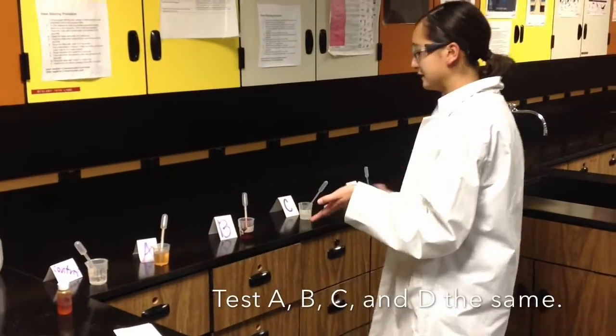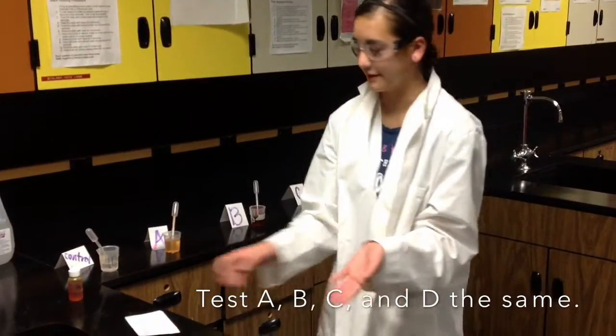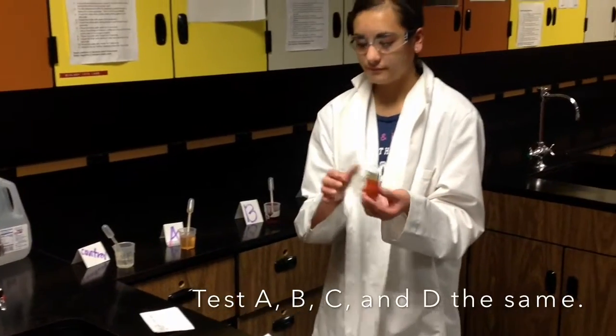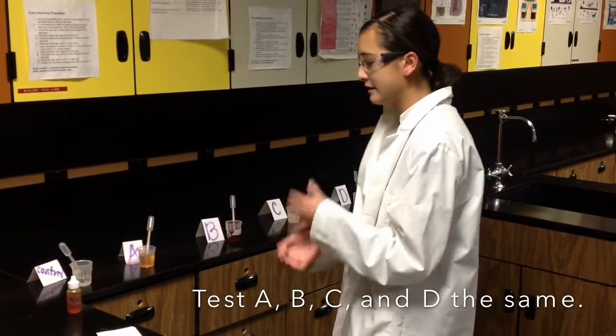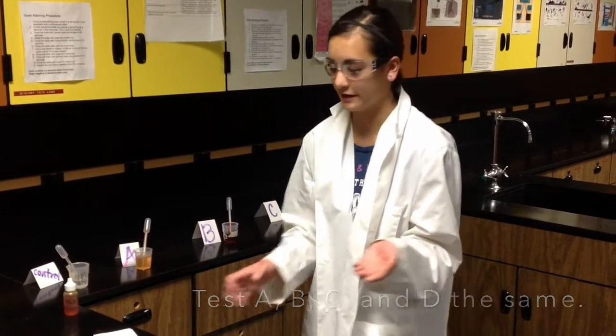For products A, B, C, and D, you'll take one drop of each product and put it on the slide, then add the reagent. If it turns black, there's alcohol in it. If there's not alcohol in it, it won't turn black.